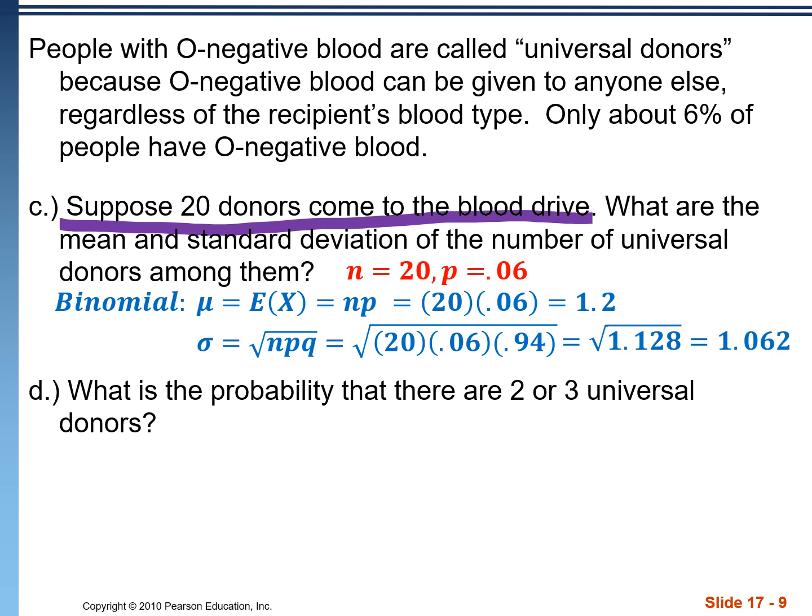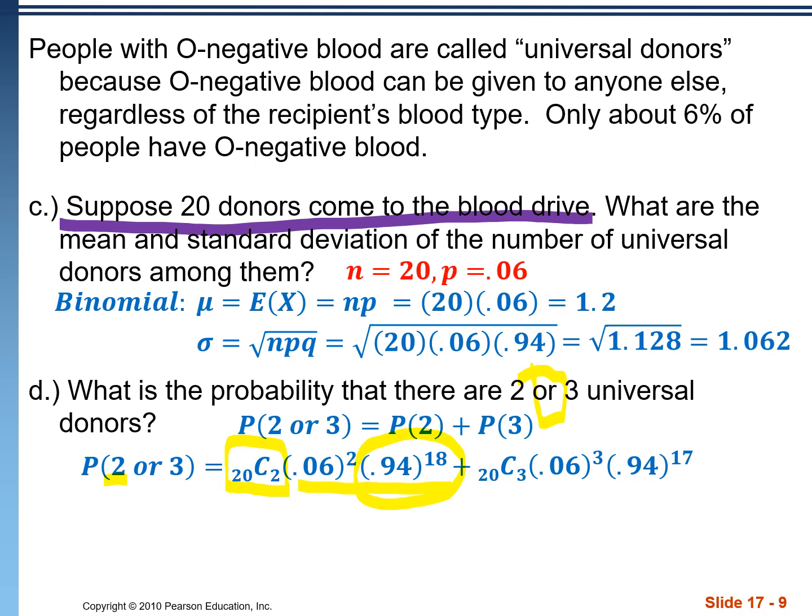Part D, what's the probability that there are two or three universal donors? Remember that or means addition. So we're doing two binomial problems. So the first, we have 20 people in our sample. We're choosing two of them. And then we do our actual probability of a single instance of 0.06 to the second power because we want two of these people to be O negative donors. The other 18 are not O negative. That's specifically for the two. We're going to add on the three where basically all those twos become three and the 18 decreased by one to become 17. Add those together and we get 0.3106.